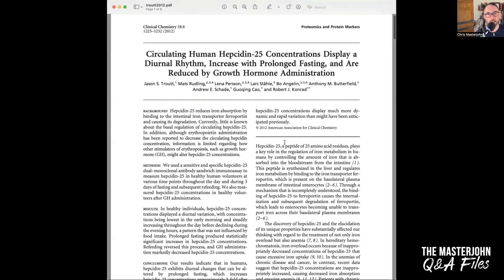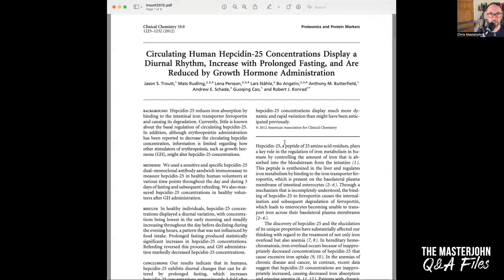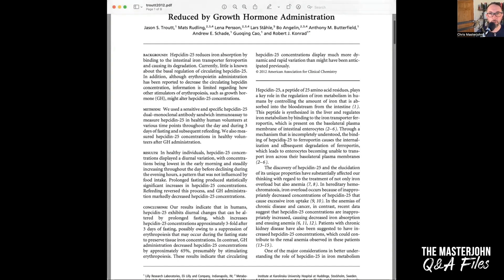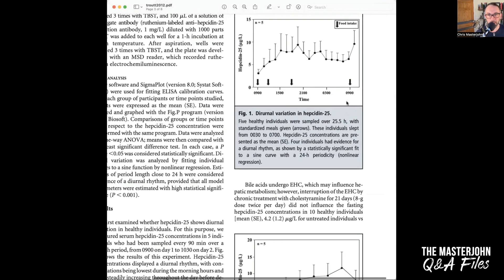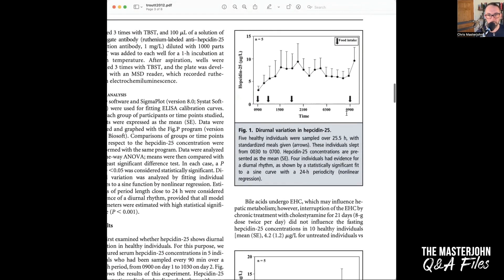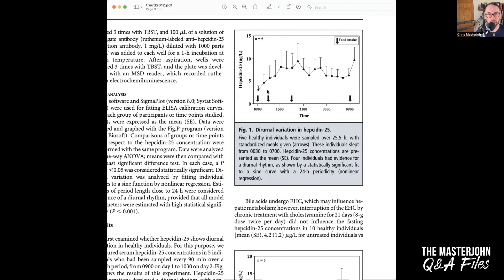This is Trout 2012: Circulating Human Hepcidin 25 Concentrations Display a Diurnal Rhythm, Increased with Prolonged Fasting and Are Reduced by Growth Hormone Administration. This is five healthy individuals sampled over 25 hours with standardized meals given at the arrows. And you see that hepcidin basically maxes out around 3 p.m. and lasts and even increased a little bit at 9 p.m.